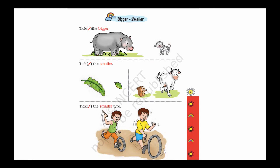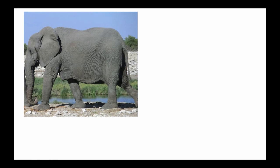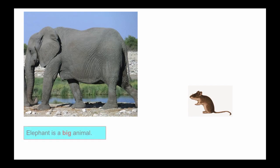Before starting the topic bigger and smaller, let's understand what big means and what small means. Let's take an example of two animals — one is an elephant and the other one is a rat. We will use the sentence: elephant is a big animal.